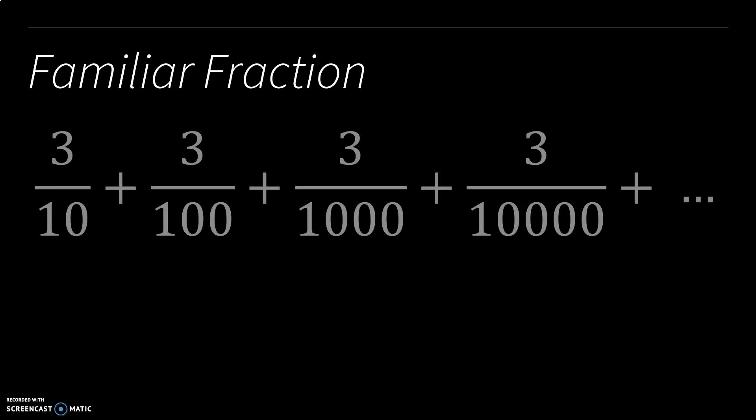We also have a familiar fraction that we could write as an infinite series of terms that we add together, so three-tenths plus three-hundredths plus three-thousandths plus three-ten-thousandths. So if we write that in decimal form, point three, three, three, three, and so on.